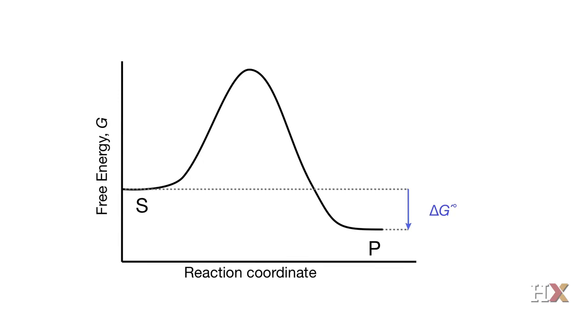If you look at the reaction coordinate diagram, you can see that to go from substrate to product, you need to reach an intermediate state that has a high free energy. So you have an energy barrier that needs to be overcome for the reaction to proceed, for the substrate to be converted into a product.